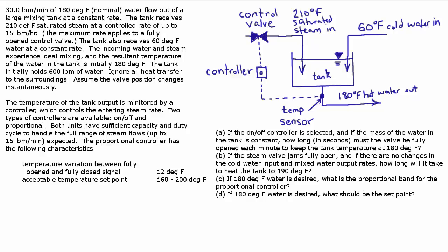Both units have sufficient capacity and duty cycle to handle the full range of steam flows up to 15 pounds per minute. The proportional controller has the following characteristics: temperature variation between fully open and fully closed signal is 12 degrees, and acceptable temperature setpoint is 160 to 200 degrees. If the on-off controller is selected and the mass of the water in the tank is constant, how long in seconds must the valve be fully open each minute to keep the tank temperature at 180 degrees?